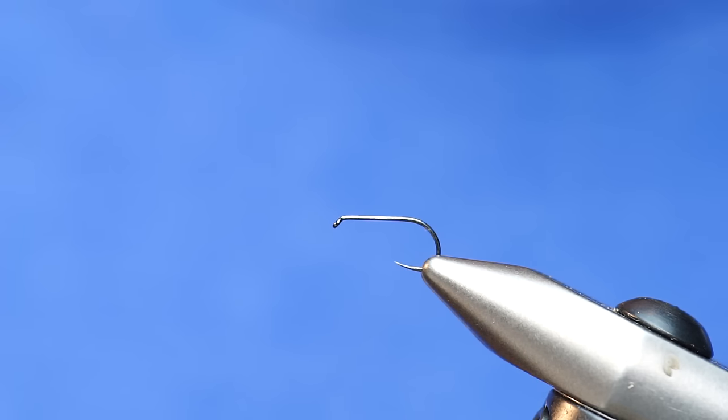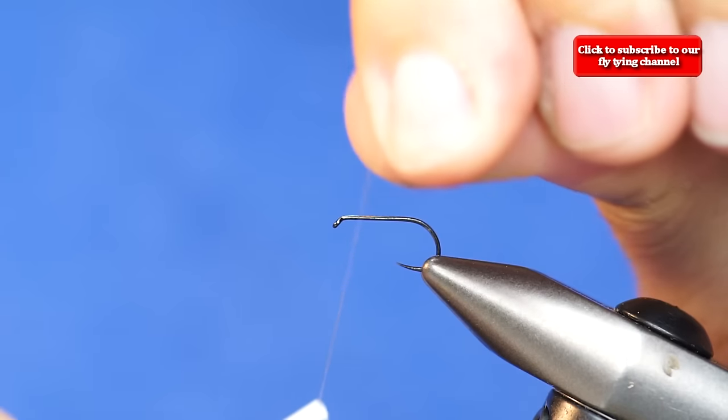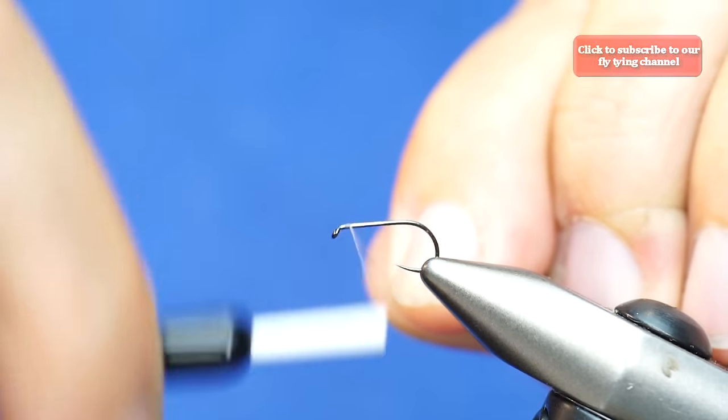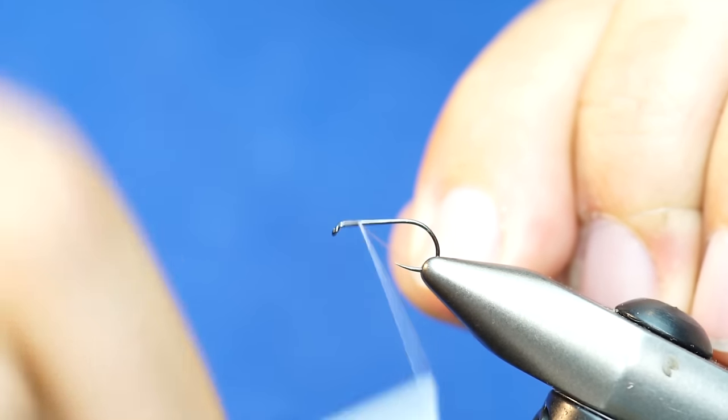We're going to tie an interesting style of mayfly called a wally wing. You'll see different types of patterns tied with different body materials and whether they have hackle or not. This is just a little variation with Calibatus in mind. We're going to start off and attach our thread right at the thorax where the wing is going to be tied in.